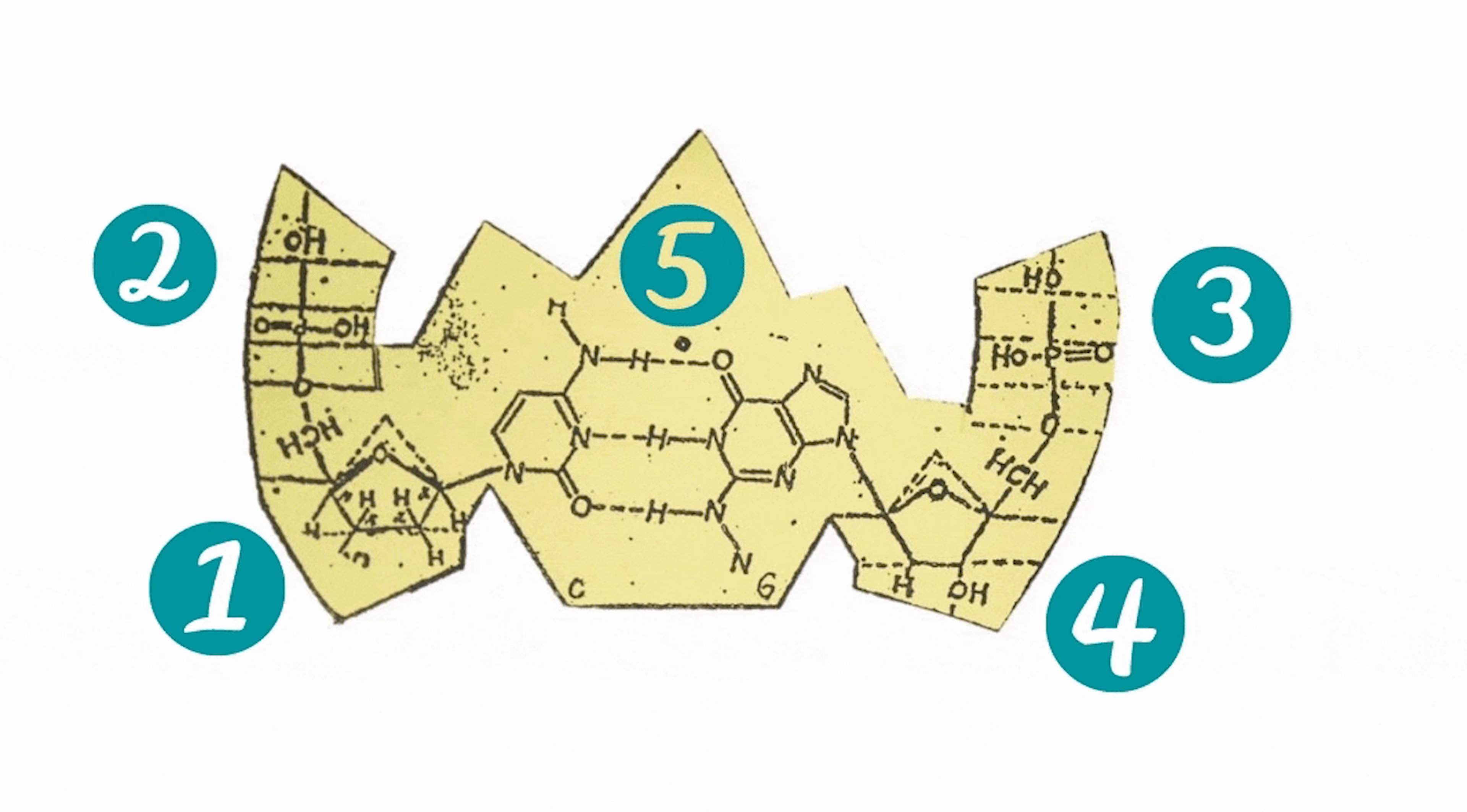A piece of model can be divided into five different parts: part one, part two, part three, part four, and the middle part, which is part five.